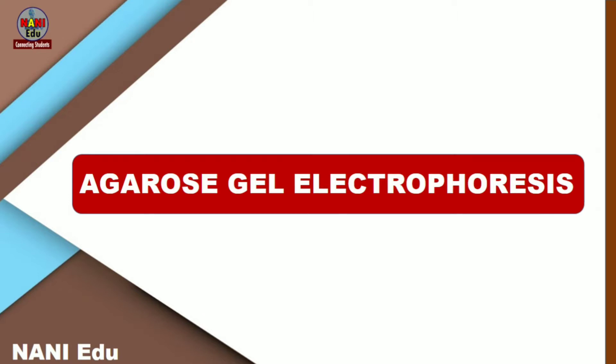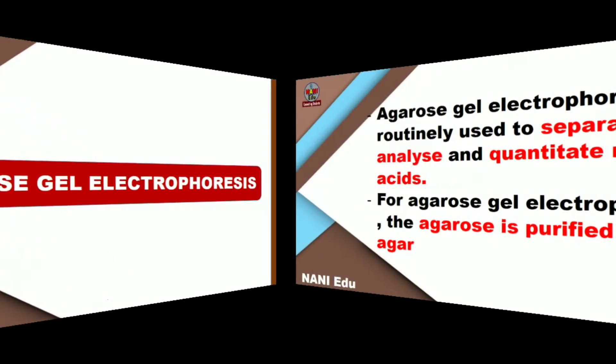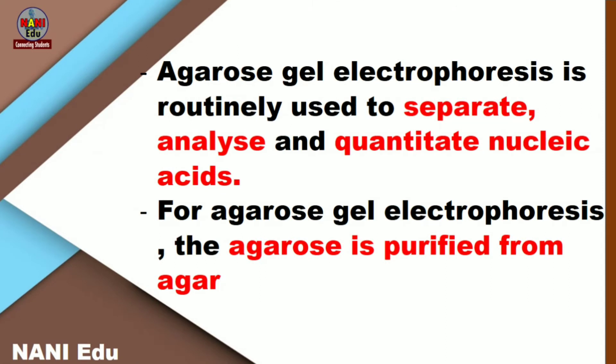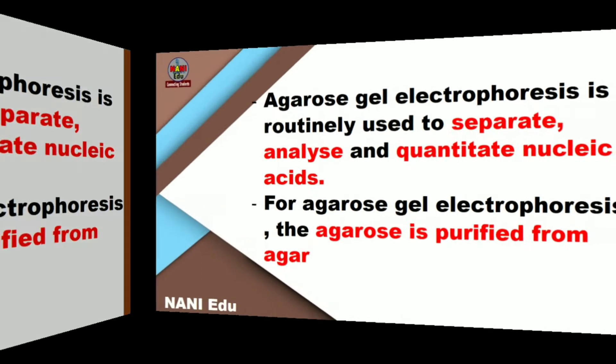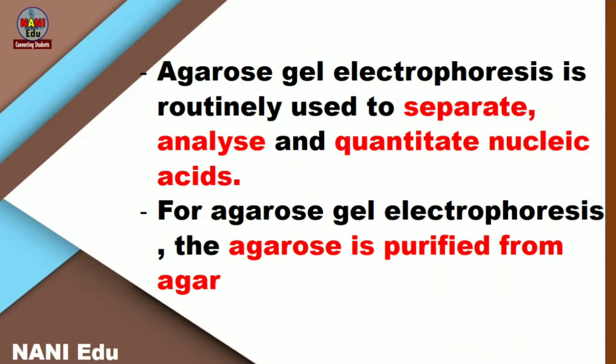I will talk about other methods. If you are looking for research, these steps will be very useful for students. I will talk about DNA and explain the alcohol. Then we will talk about agarose gel electrophoresis. Why is it used? It is used to analyze and quantitate nucleic acids, and to separate DNA — that is very important.